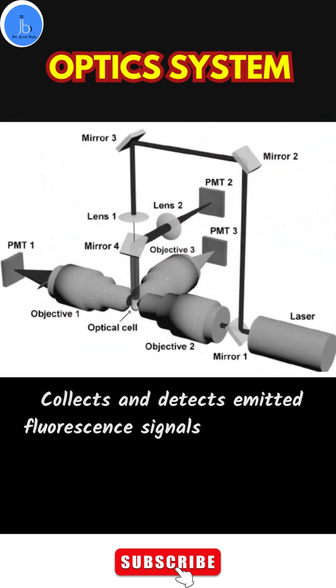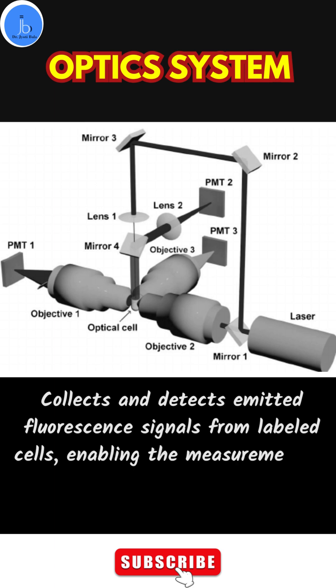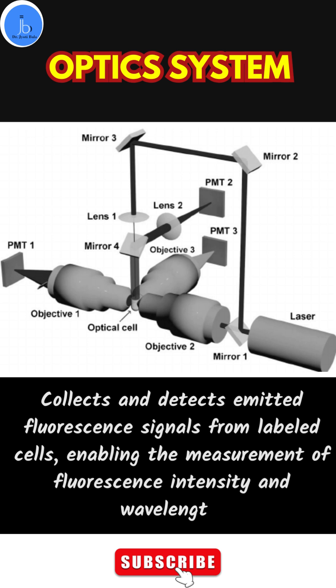The third one is the optic system, which collects and detects emitted fluorescence signals from the labelled cells, enabling the measurement of fluorescence intensity and wavelength.